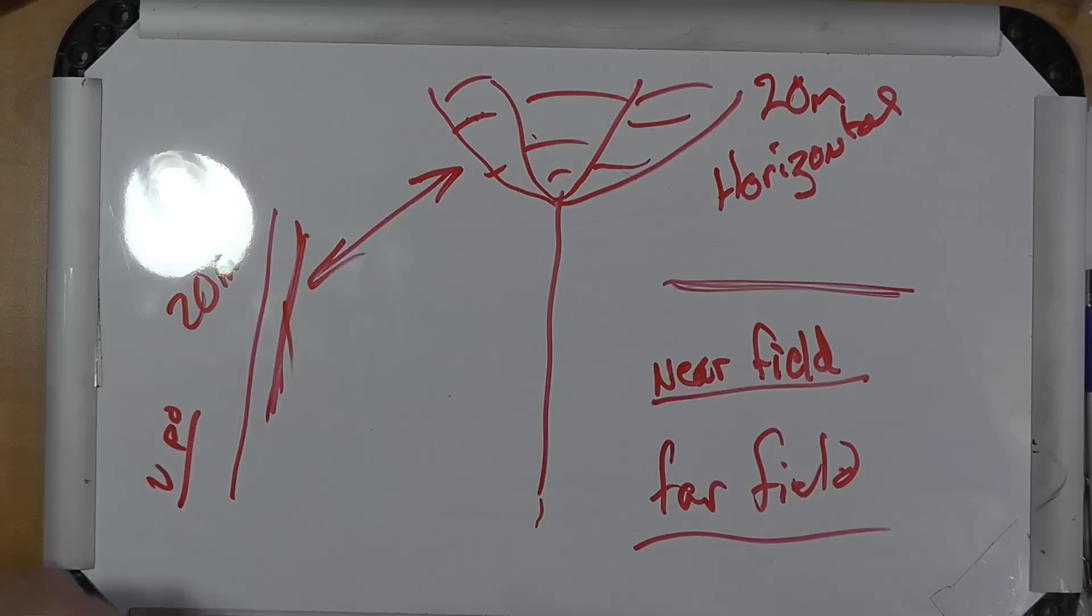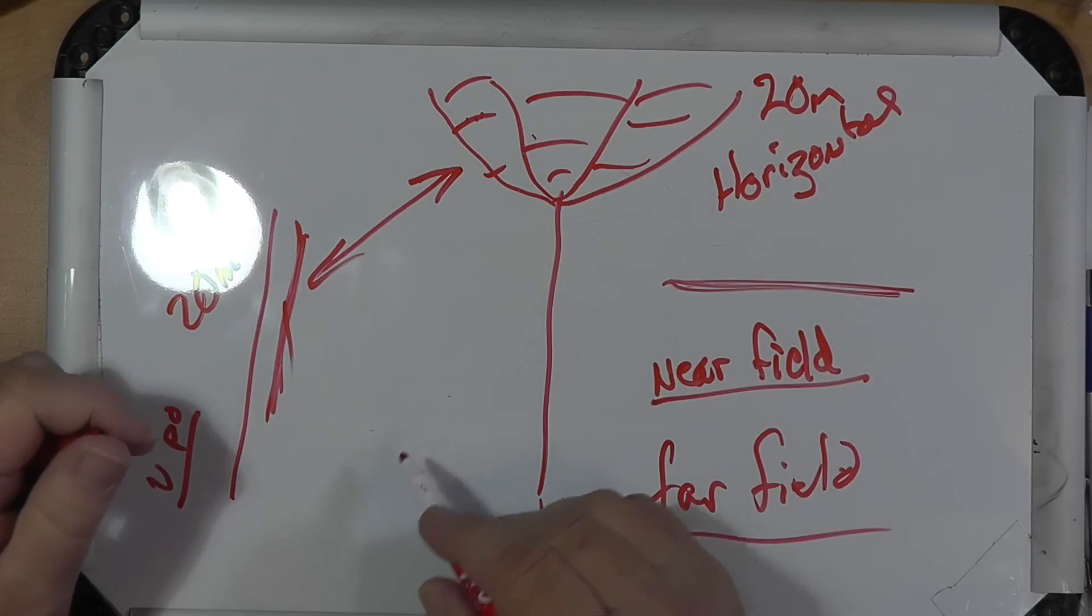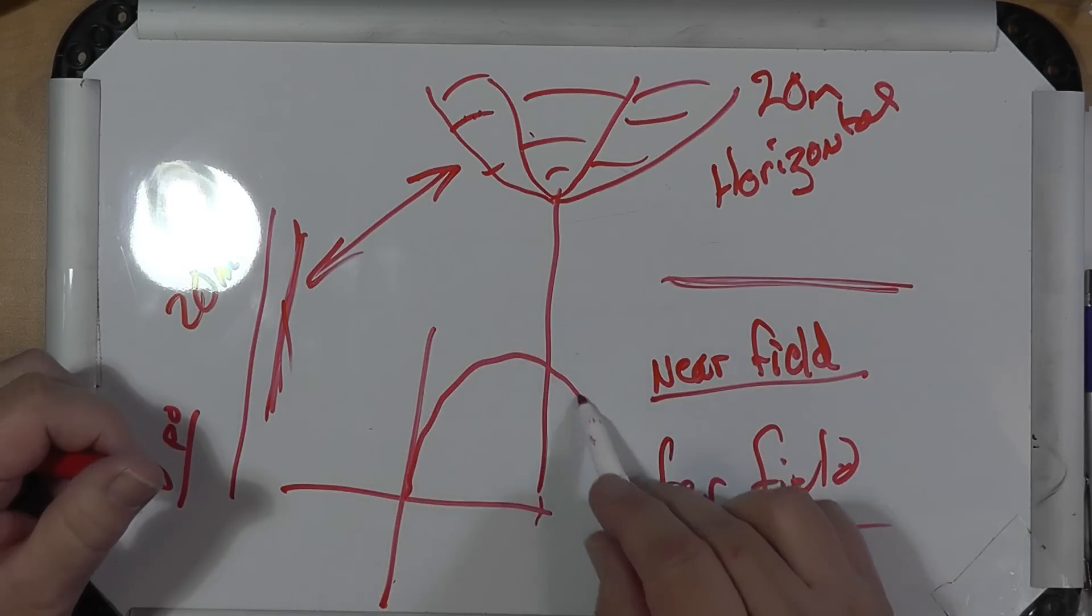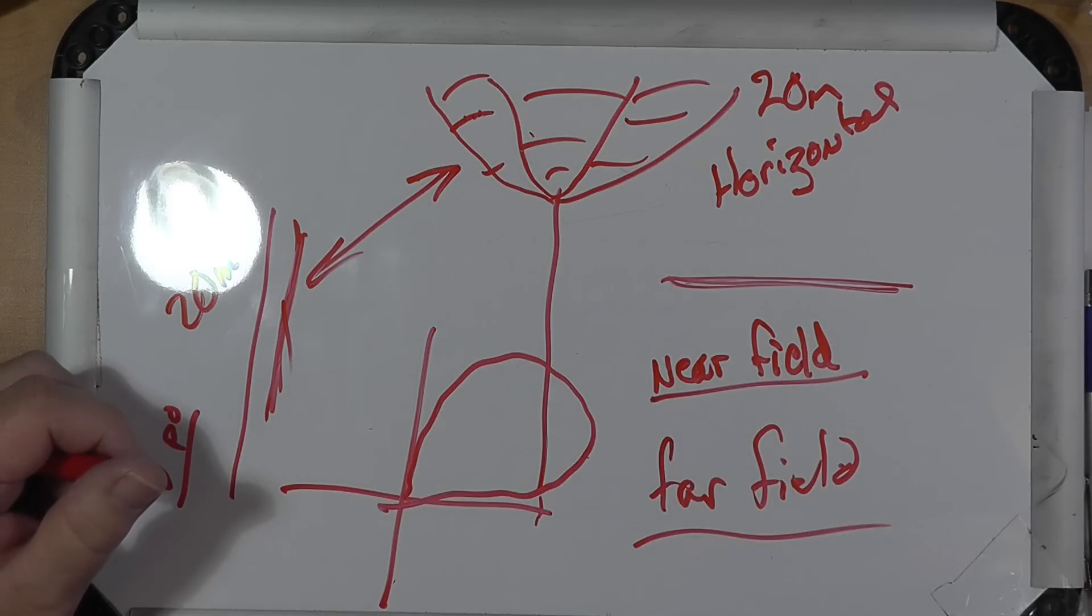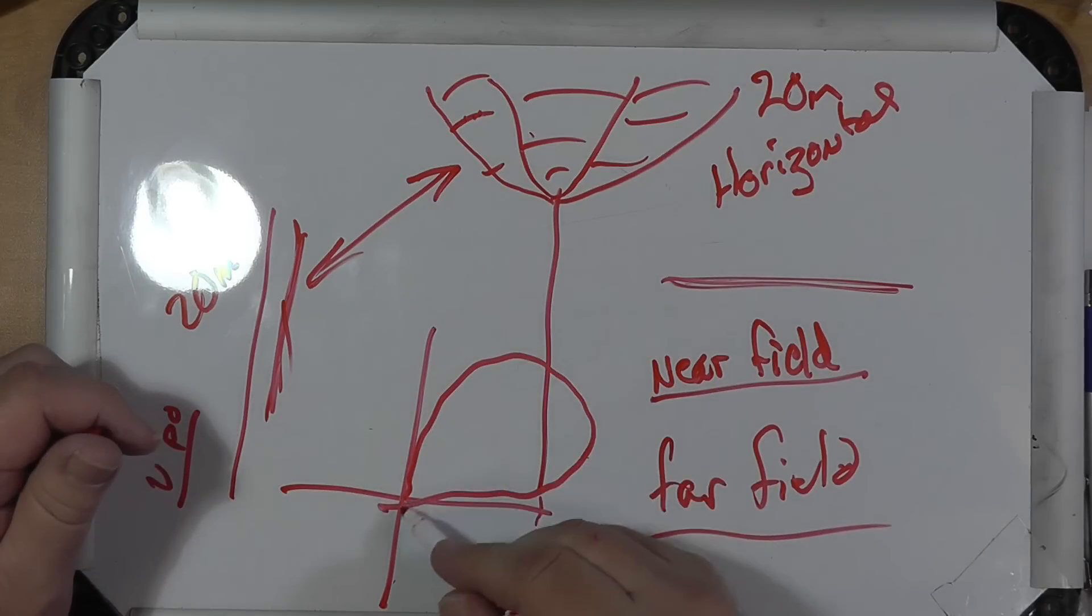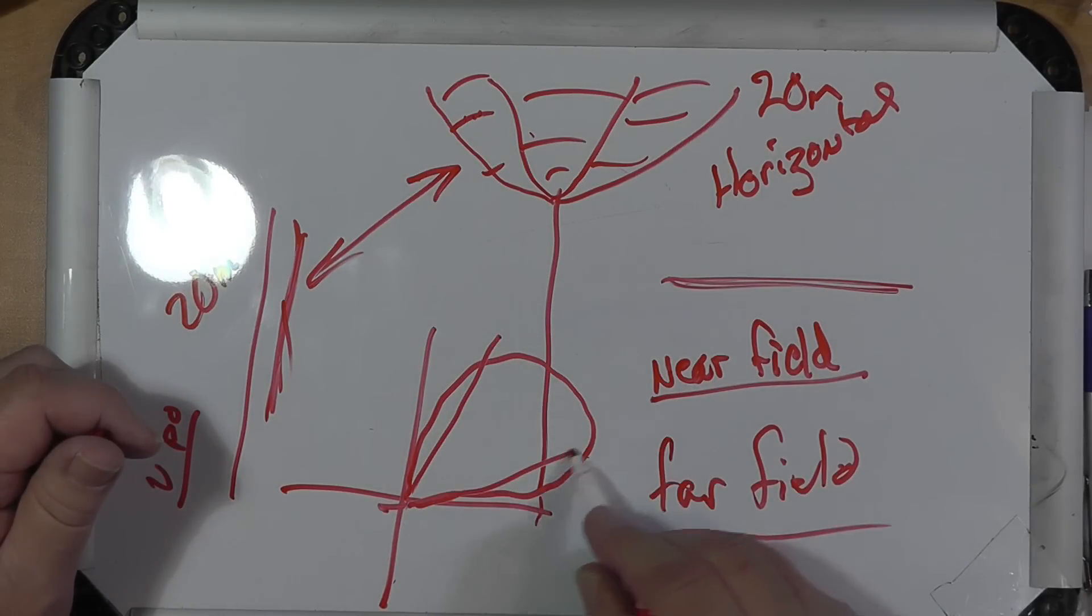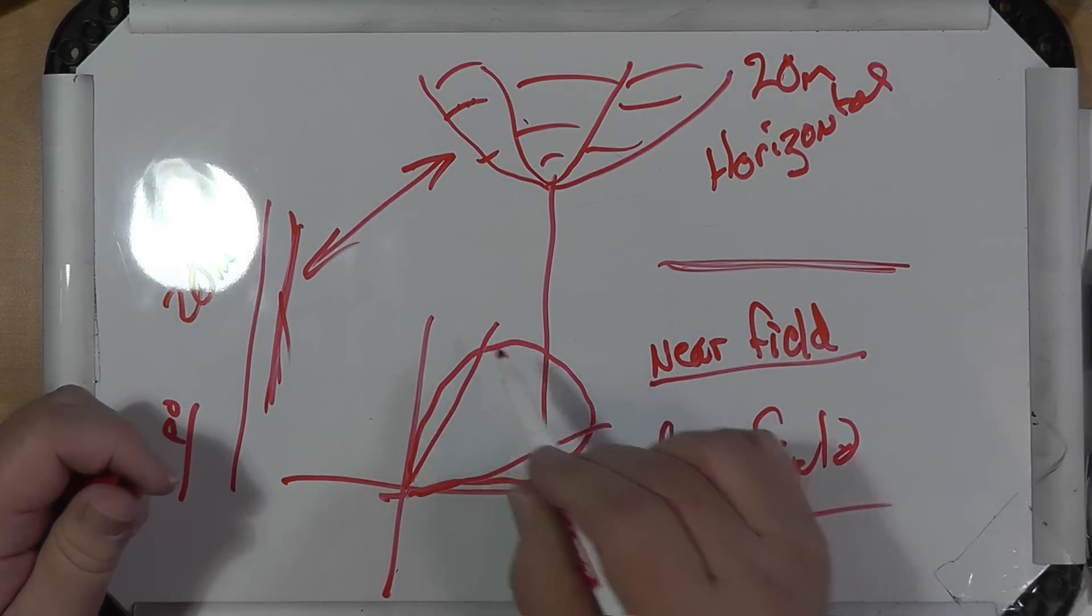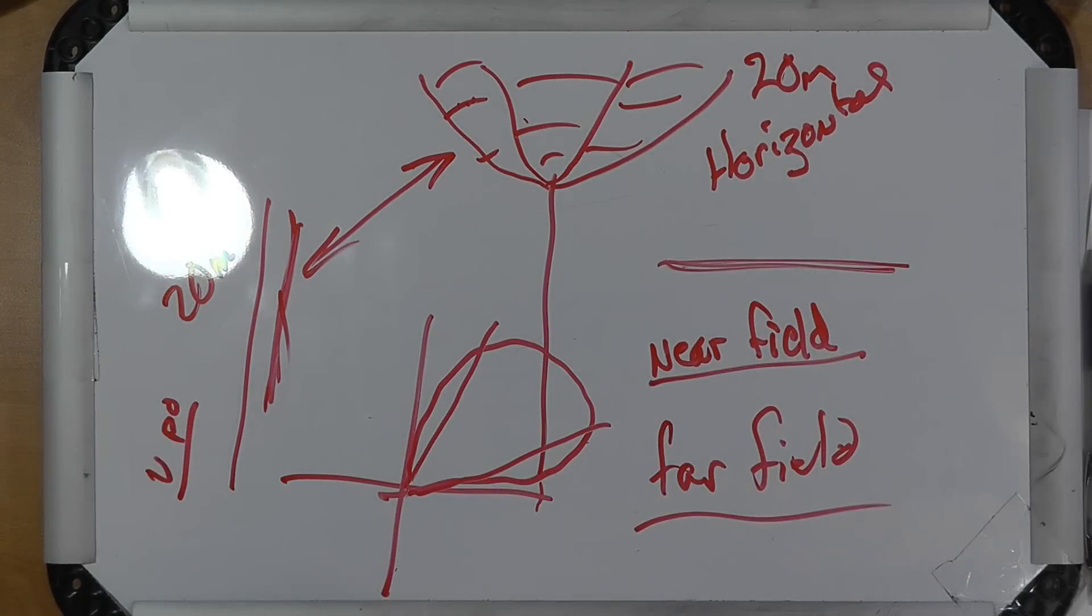Now, the hex beam has about a 90 degree beam width. It's not quite that high, but it's like this. This is looking down on it. So your beam width actually would be about 60 degrees. So it might distort this a little bit, probably not much.